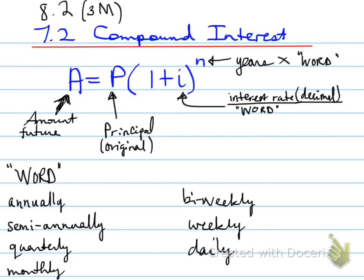So, what do these words translate? Obviously, normally we don't divide by a word, but each of these words means something in terms of a year. In fact, they mean a number in terms of a year. Annually means once a year. Semi-annually means twice a year. Quarterly means four times a year. Monthly means 12 times a year.